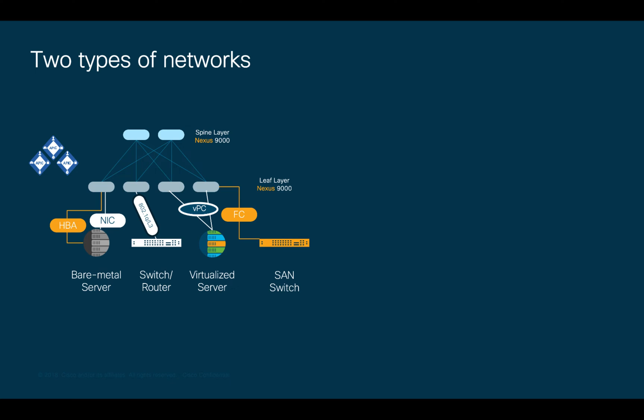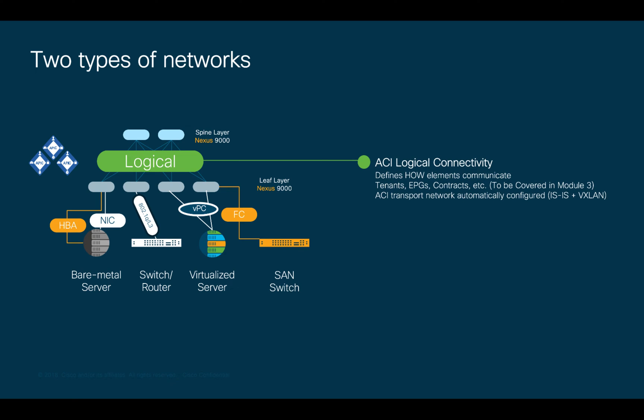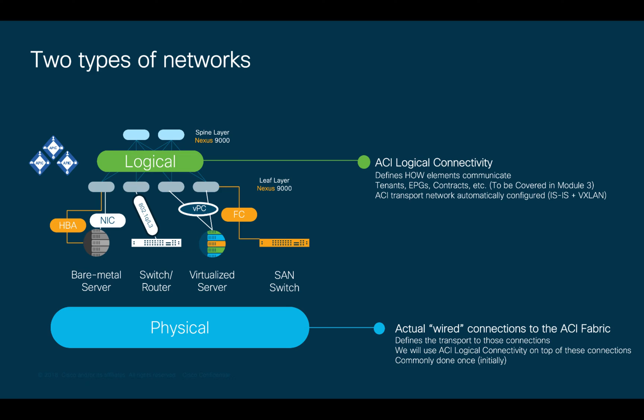All this is important because you will see that in ACI we have two different networks. The logical one, which defines how elements communicate through the ACI fabric by using concepts like tenants, EPGs, and others, which we will cover in Module 3. And the physical one, which defines how a device is connected to the ACI fabric. For example, access port, trunk, VPC, and so on. Both of them are needed in ACI as you can imagine. However, keep in mind we will manage them both through a single pane of glass, which in this case is the APIC.